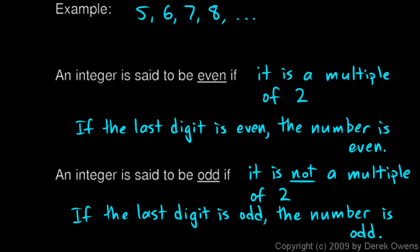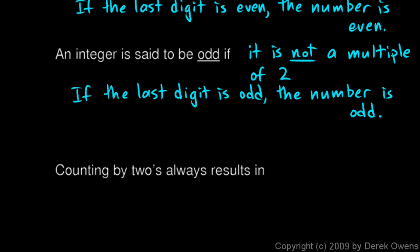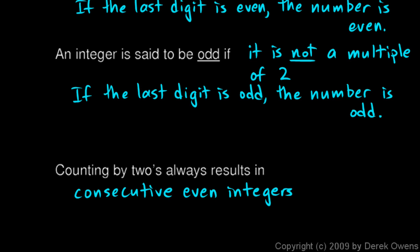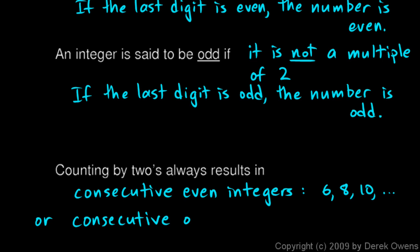Counting by 2's always results in what we would call consecutive even integers — like 6, 8, 10, and so on. If you start with an even number and count by 2's, then every single number in your list is even. We call those consecutive even integers, or consecutive odd integers — something like 3, 5, 7, 9, 11, and so on. If you start with an odd number and count by 2's, then every number in the list is odd.